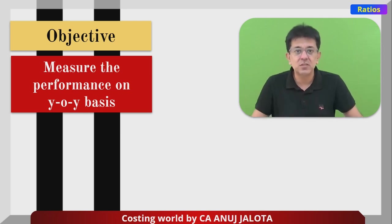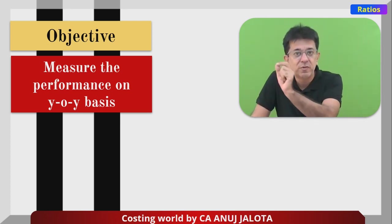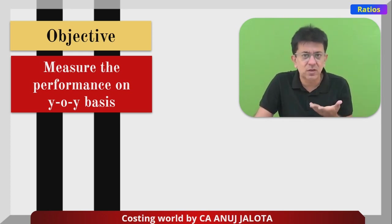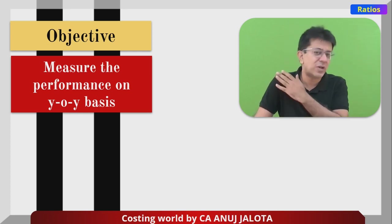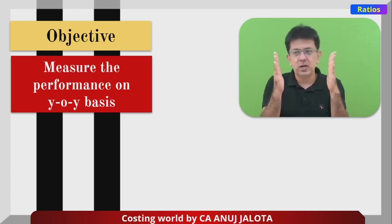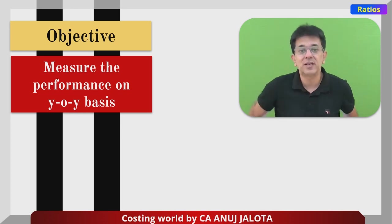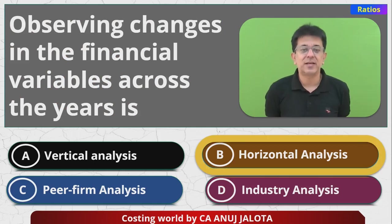How much have sales increased — say from 100 to 120, from 120 to 150? You try to find out those percentages. You can do this for absolute figures, for current ratios, or for any other ratio you deem fitting. So if for one company you have data for many many years, that is called horizontal analysis. Therefore the answer in this case should be B — Horizontal Analysis. That's the correct answer.